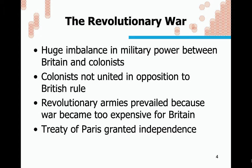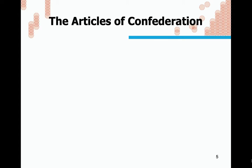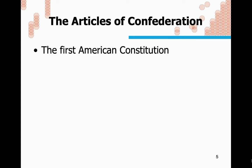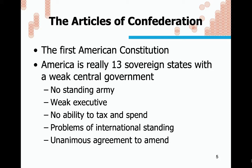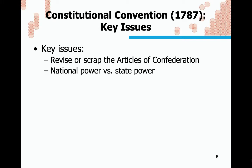The Treaty of Paris granted independence to the United States. The Articles of Confederation — which I covered last time — created 13 sovereign states with a very weak central government: no standing army, a very weak executive, no president, no national ability to tax and spend, and states had their own forms of foreign policy. It required unanimous agreement to amend, which made it very tricky.